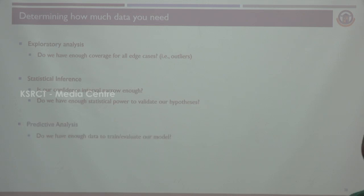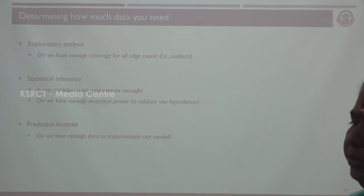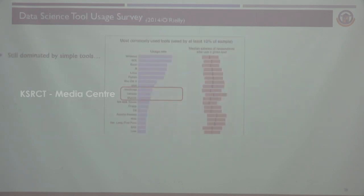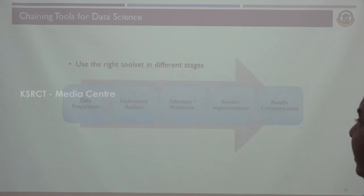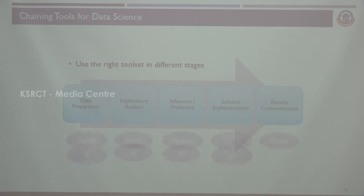Data science tools are used: Excel, R programming, Tableau — most of the tools are used for the data science process. For determining how much data you need, exploratory analysis, statistical inference, and predictive analysis are used. Some of the data science tools include Windows, SQL, Excel, R, Linux, MySQL, Tableau, and JavaScript — these are open-source tools most data scientists use. For choosing tools for a particular dataset at different stages: data preparation uses Spark or RDBMS/SQL; exploratory analysis uses Excel or R programming; inference and prediction uses Python; solution implementation uses Python and custom coding; results communication uses Excel and graph charts.